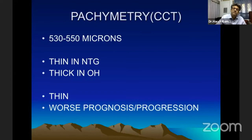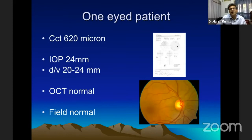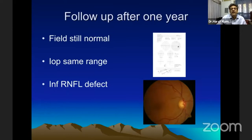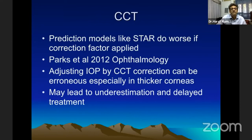Pachymetry is important — the thinner the cornea, the more suspicious and aggressive you have to be. To illustrate how observation can lead to problems: a one-eyed patient with 620 micron corneal thickness, diurnal variation of 20 to 24 mmHg, normal fields, normal disc — everything looks good. I said come back after three months, but the patient walked in after one year. The field was still normal but there was an early wedge defect, meaning OCT changes would have already shown progression. Going back, we realized that correcting for CCT — especially in models like STAR — we were underestimating pressure and creating trouble, as happened in this case.